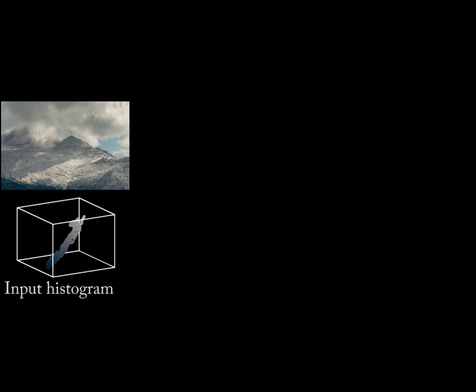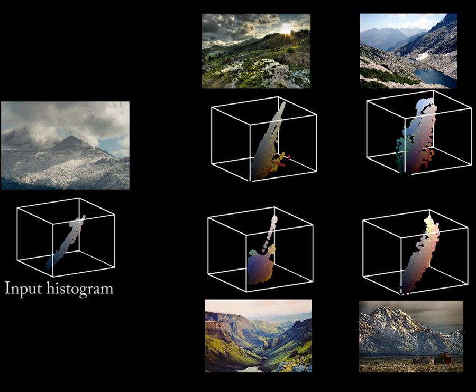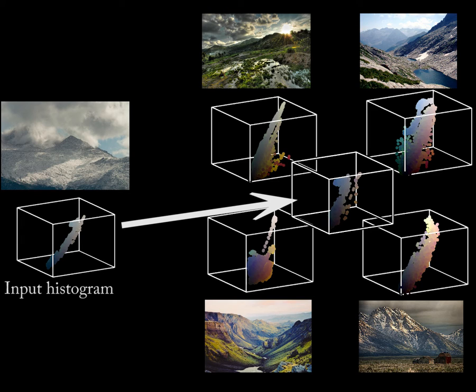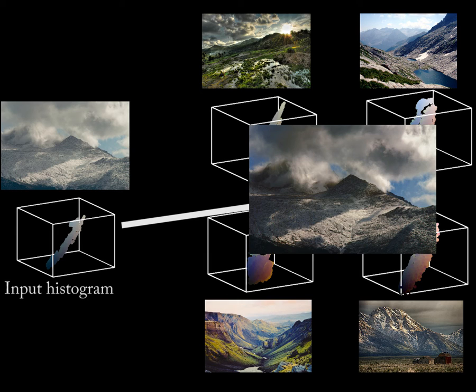We showcase our tool on a set of applications. Given an input amateur photograph and a database of professional photographs, our tool finds the barycentric coordinates of the color histogram of the input photograph within the database. This defines a color histogram lying within the space of color histograms of professional photographs, which best approximate the input histogram. This histogram can be used to correct the input photograph's colors.